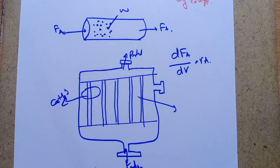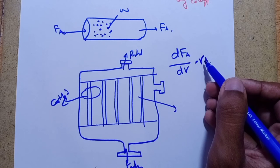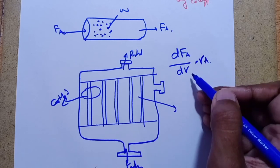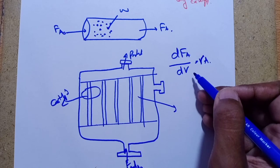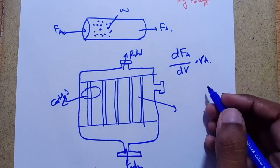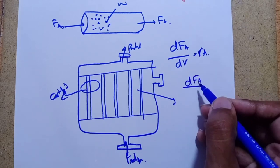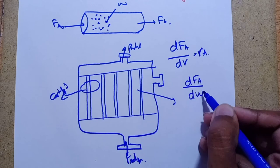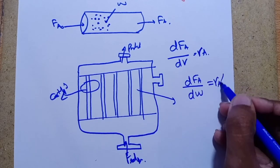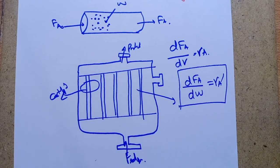That equation was dFA/dV = RA. In the analogous case here, instead of talking about volume, we have W, the mass of catalyst. So here we use delta W: dFA/dW = RA'. This is called the design equation of PBR.